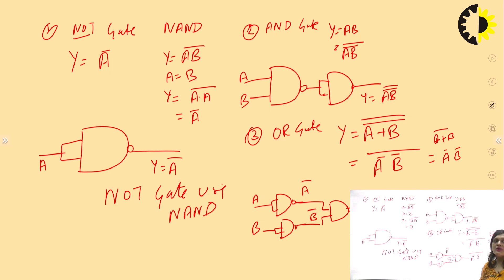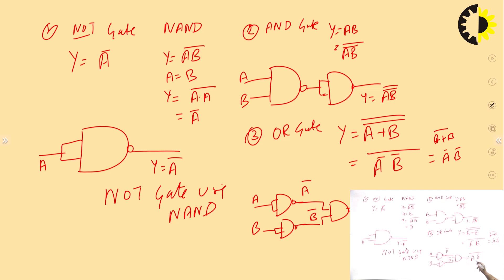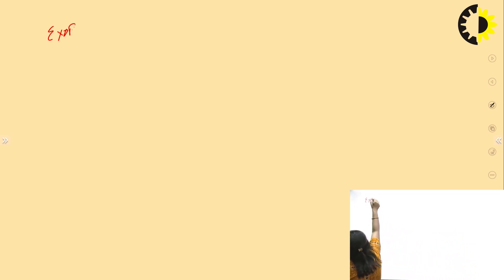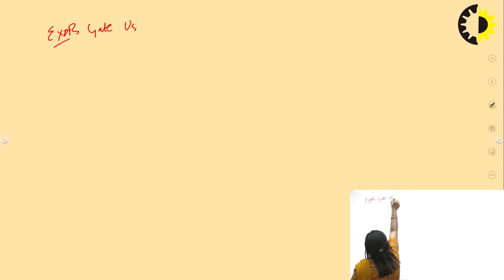Similarly, we can design the NOR gate with NAND by inserting an additional NOR (complement) stage after the OR gate design, since NOR is the complement of OR.